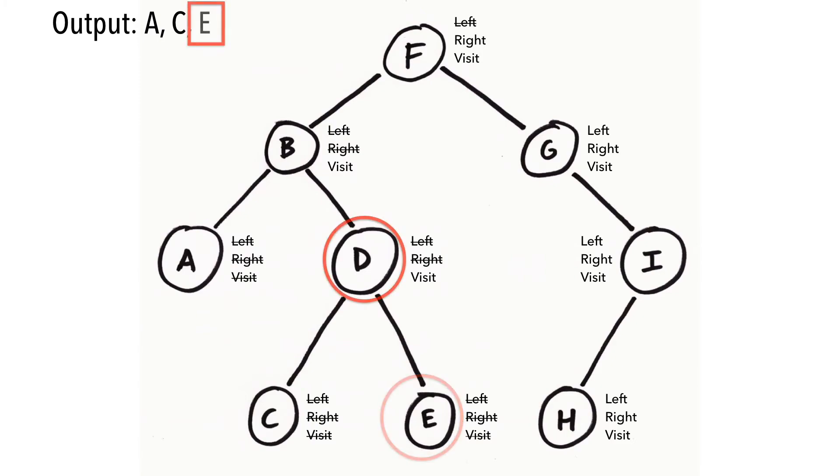We move back up the tree, printing D and B on the way. I'm sure you see the pattern now. Let's watch the algorithm play out.